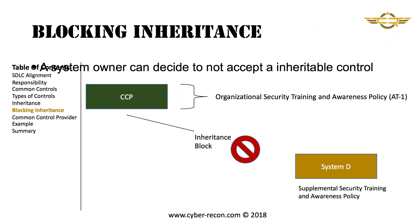In rare cases, inherited controls can even be blocked. While it's possible to block control inheritance, we don't recommend doing this, as blocking an inherited control means the Information System Owner will be required to implement 100% of the control that could otherwise be inherited from a Common Control Provider. For example, System D has determined that they should block the inheritance of AT1 Awareness Training Policy, and will therefore be required to comply with all of the requirements of Control AT1.